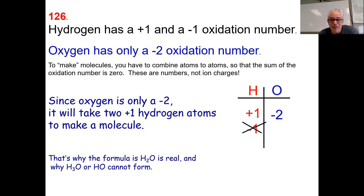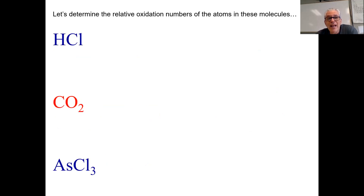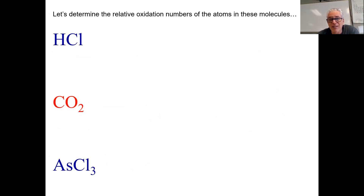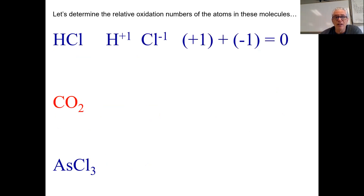We can also figure out what the oxidation numbers are based upon the compound. For hydrogen and chlorine — hydrogen has a positive one and chlorine has a negative one. When we combine those oxidation numbers, they sum to zero. That works.